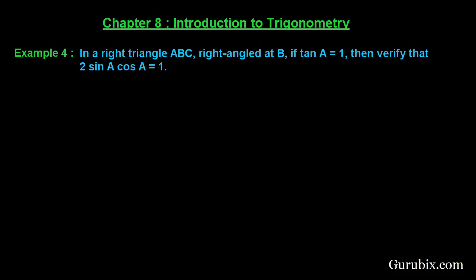So let us see how to solve this question. First of all, let us draw a rough sketch of a right-angled triangle. This is our right-angled triangle which is right-angled at B.